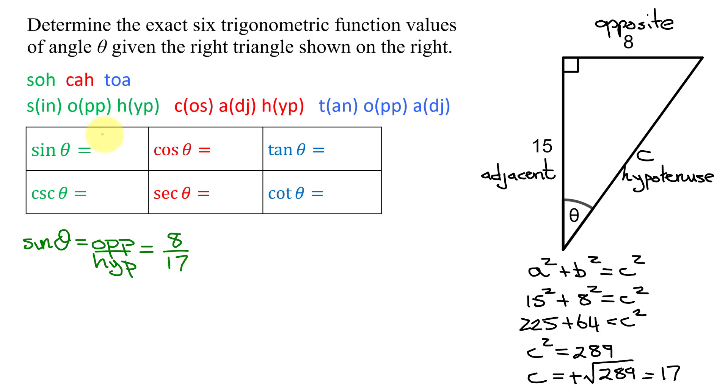Now, immediately, we can find its reciprocal, which is the cosecant of theta. Remember, that's 1 divided by the sine of theta. How do you take the reciprocal of a fraction? You just flip it upside down. So I get 17 divided by 8.